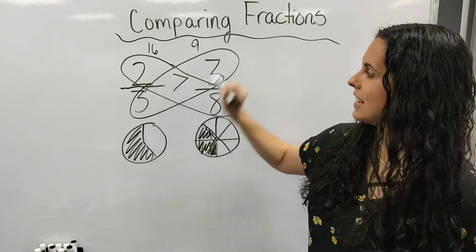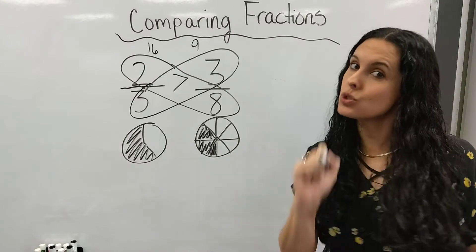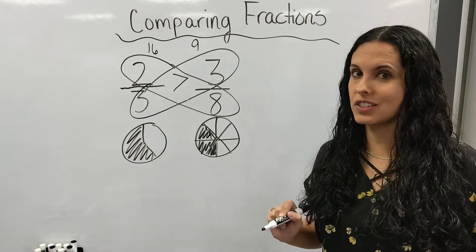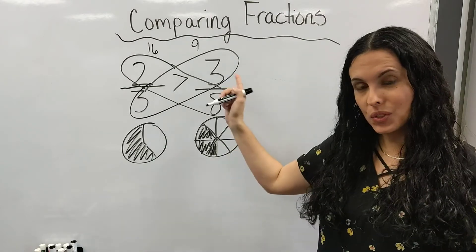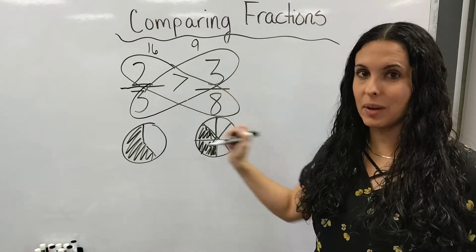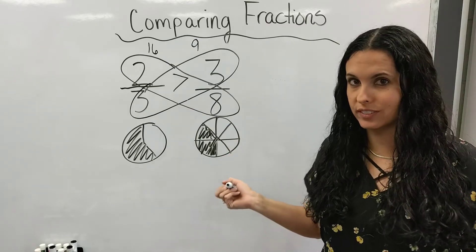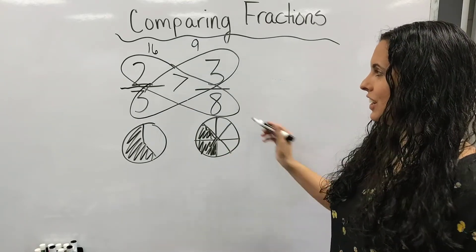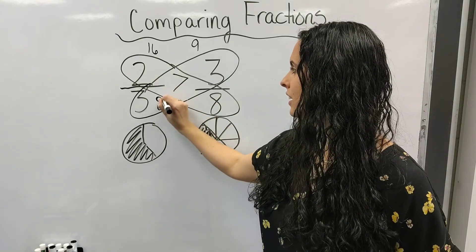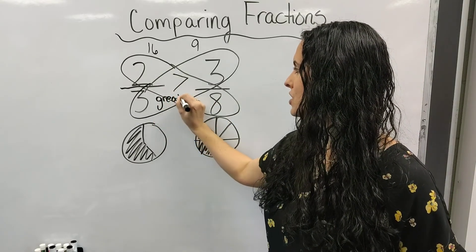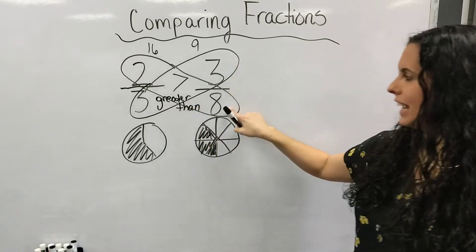But this definitely will give you a way to check to make sure that you have done your fractions the correct way. And it is much easier to use the butterfly if you have denominators like fifths or sevenths. That's hard to draw. So two-thirds is greater than three-eighths.